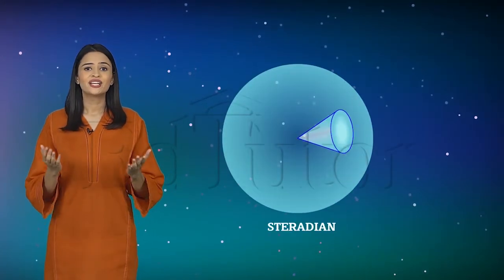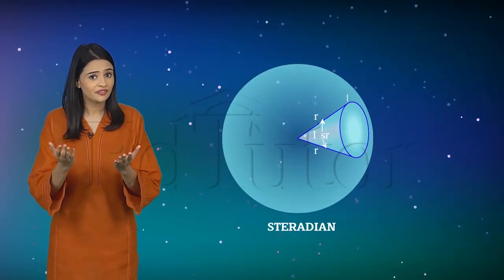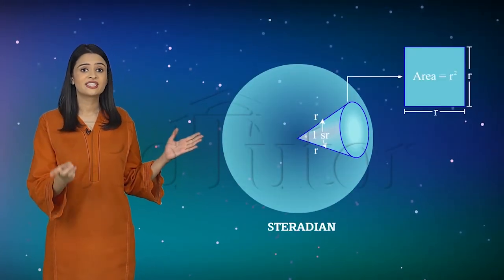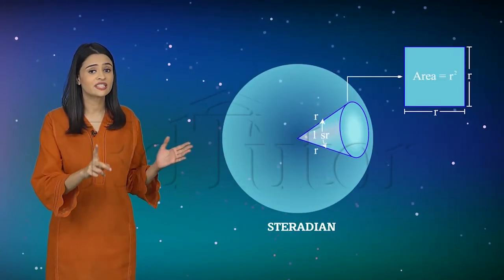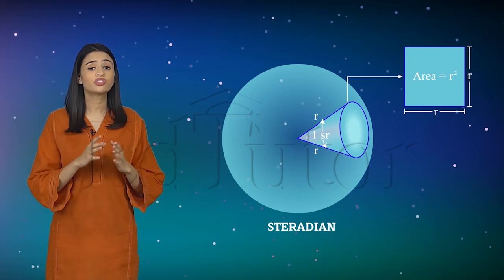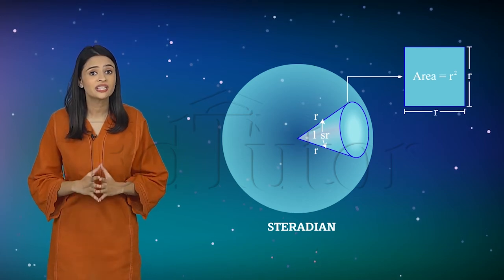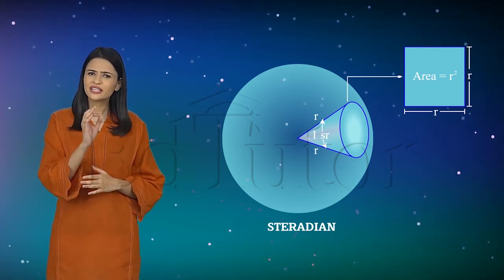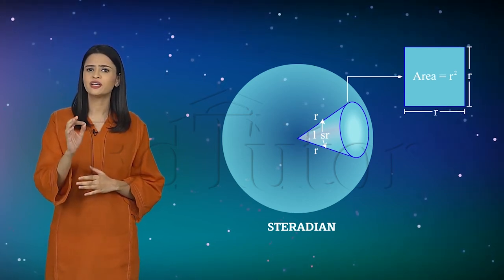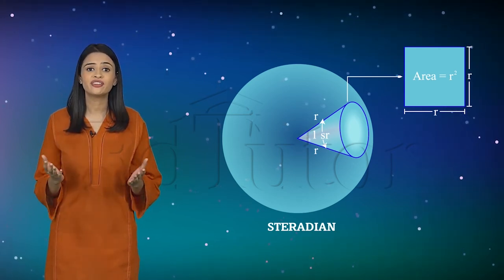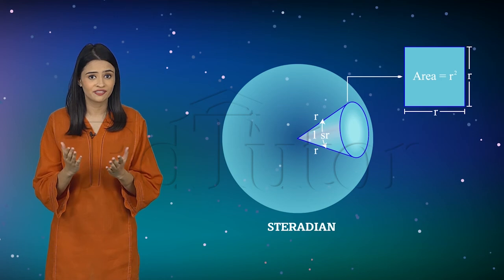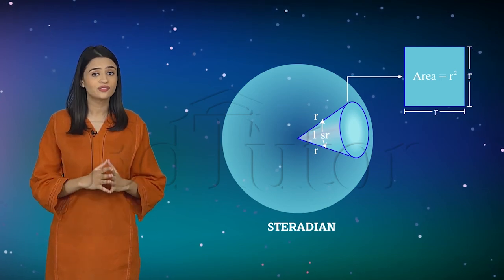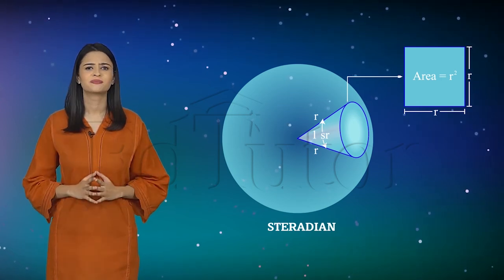Similarly, look at another figure on this side. The steradian is a solid or three-dimensional angle formed at the center of the sphere by an area of its surface equal to the square of the radius of the sphere.